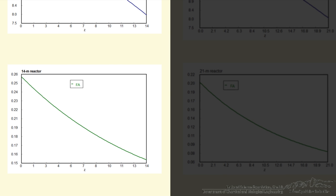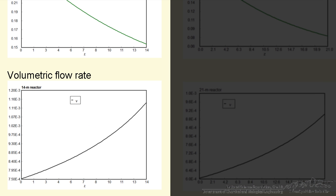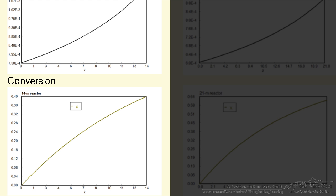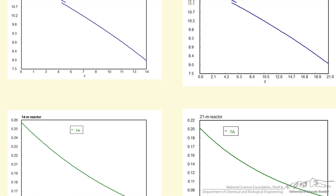The molar flow rate of our reactant A decreases, as we expect. The volumetric flow rate increases because of the decreased pressure, and this is the conversion that goes from 0 to 40%.